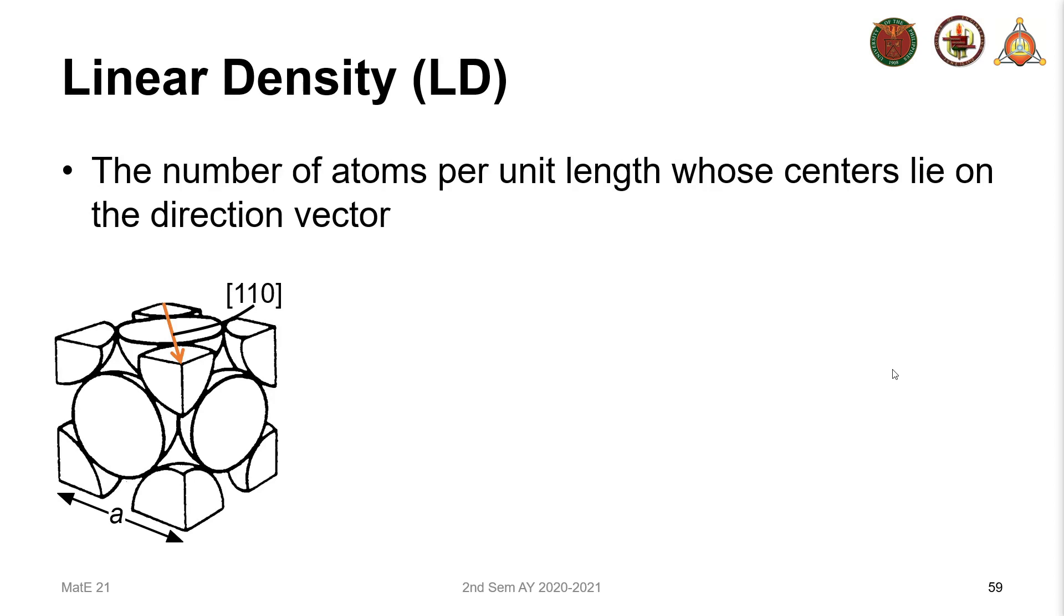First, the linear density. The linear density is a measure of the packing of atoms in a certain crystallographic direction. It's the number of atoms per unit length whose centers lie on the direction vector.